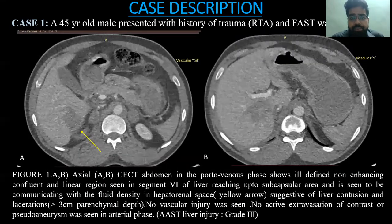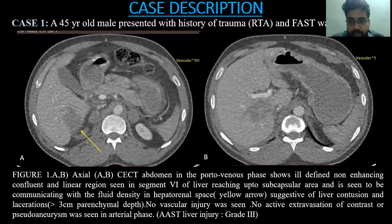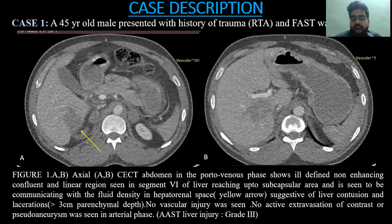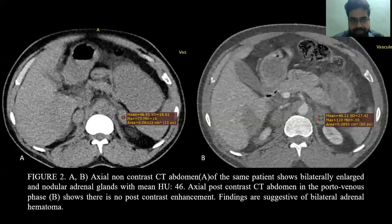Case 1: A 45-year-old male presented with history of trauma and was FAST-positive. Axial scans of CECT abdomen in the portal venous phase show an ill-defined non-enhancing confluent and linear region seen in segment 6 of the liver, reaching up to the sub-capsular area and communicating with fluid density in the hepatorenal space. This represents liver contusion and laceration. No vascular injury was seen. This was graded as AAST liver injury grade 3.